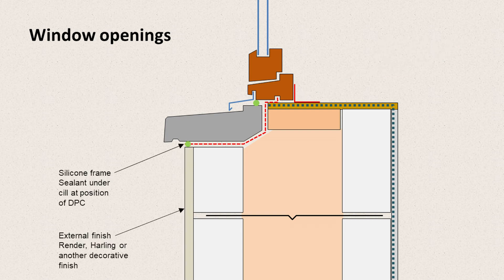The next step is to install the external finish — in this case it's a render coating or harling, but it could be brick slips or some other decorative finish. The joint between the underside of the sill and the harling would be finished with a sealant bead.